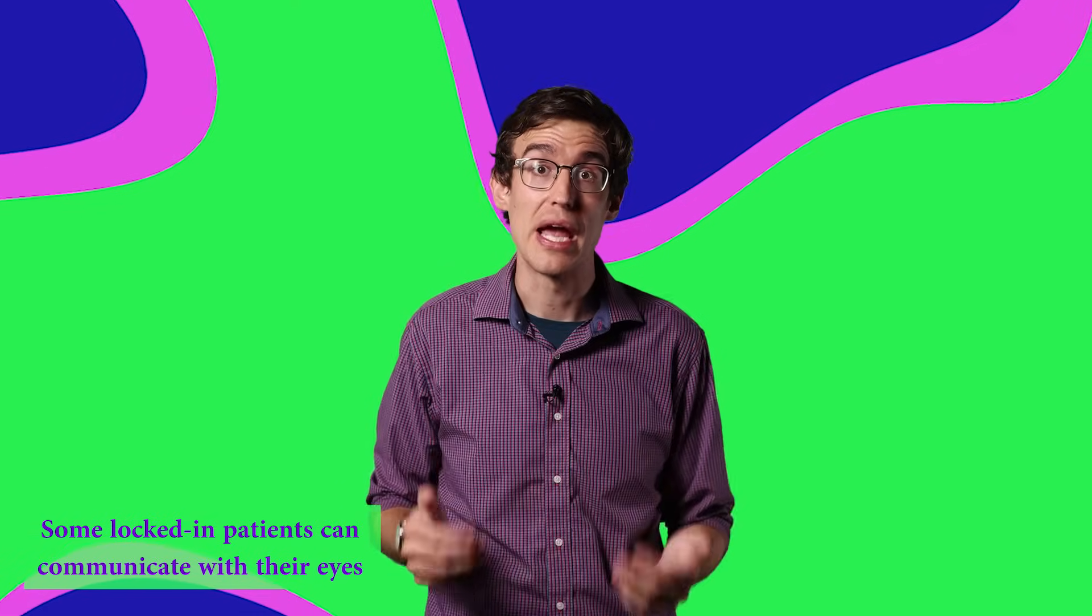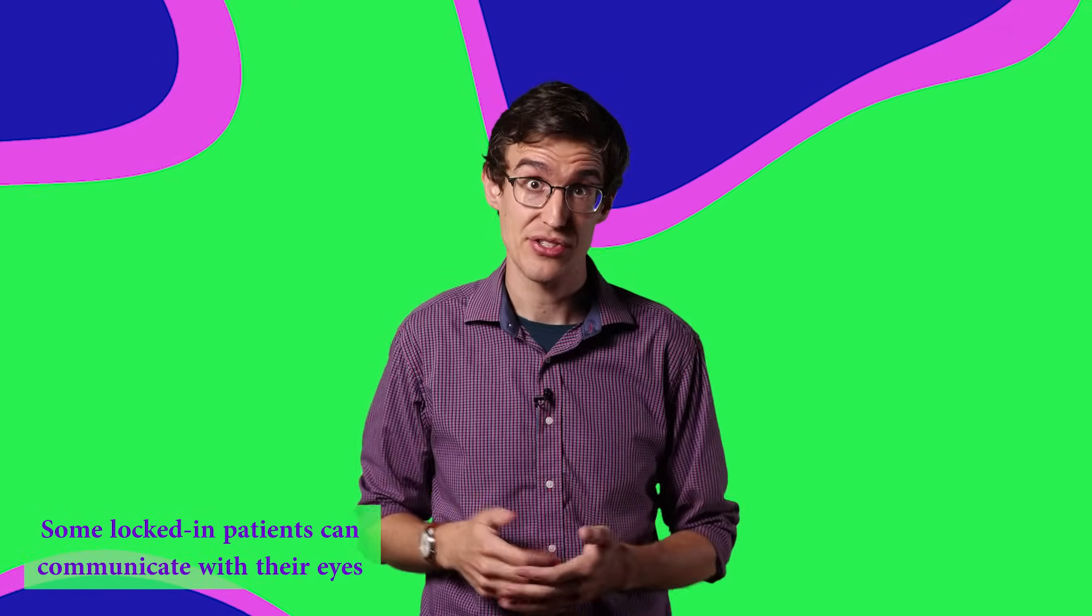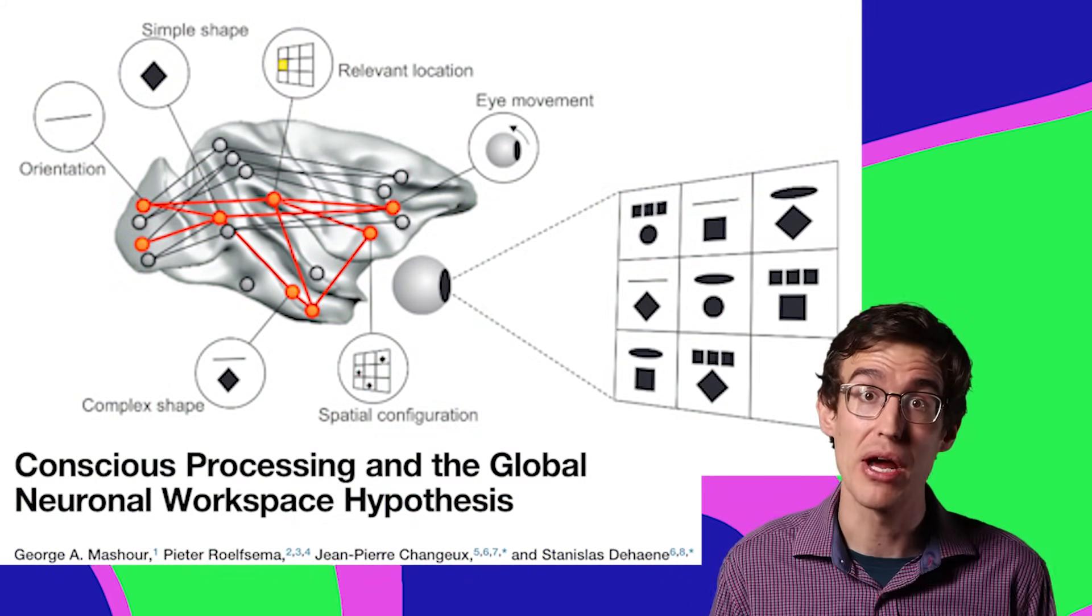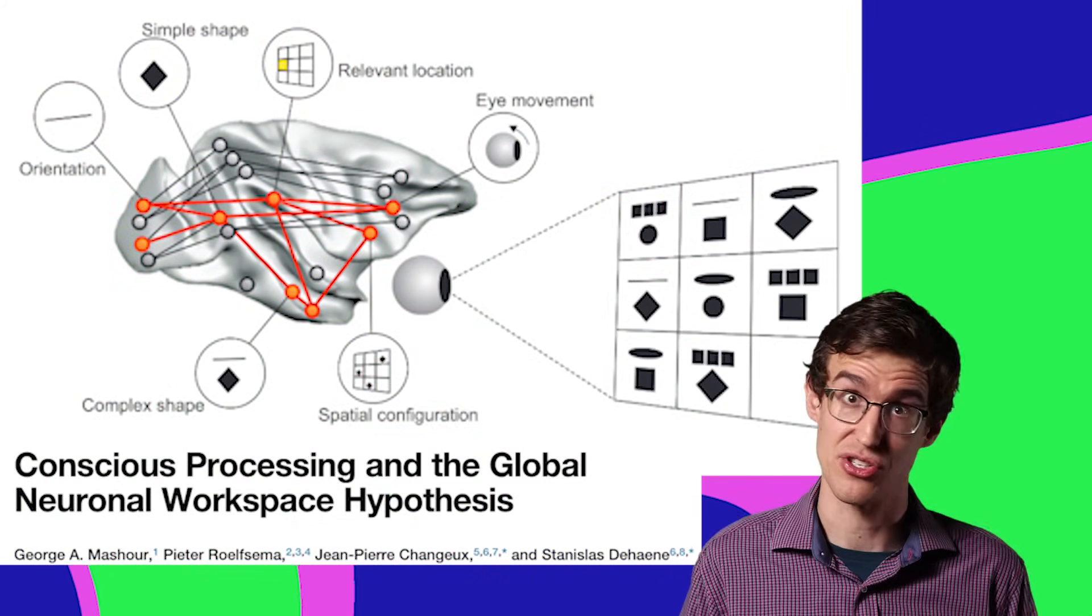We want to know if we're creating organoids that can feel things. Unfortunately, the zap and zip is just a prototype and we can't calibrate it to measure consciousness in mini-brains. But fortunately, mini-brains don't have all the diverse and interconnected brain areas that support human consciousness.